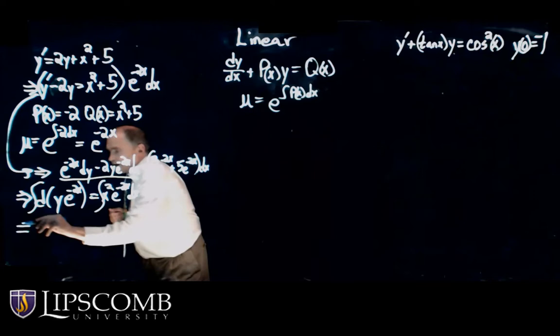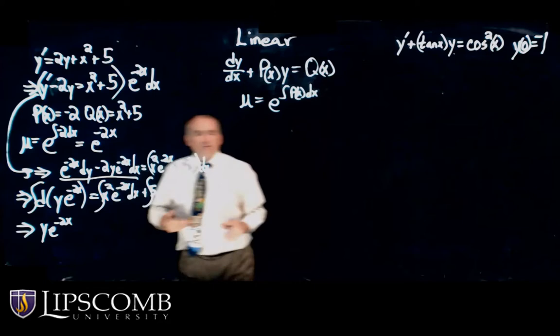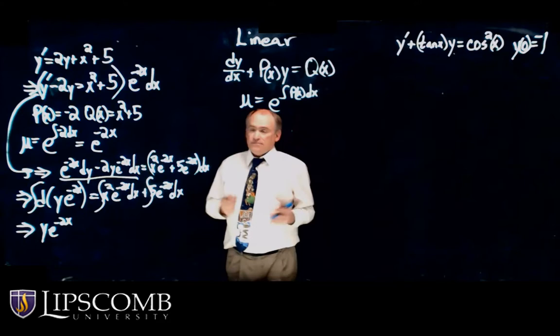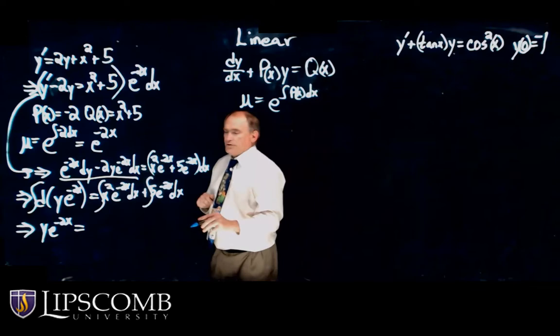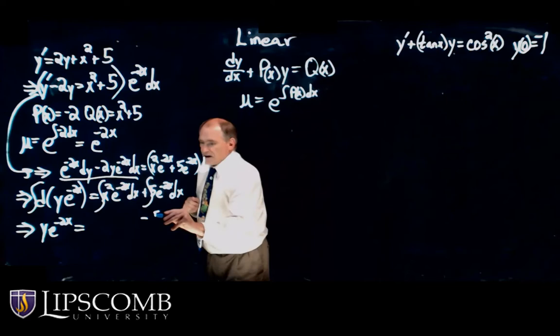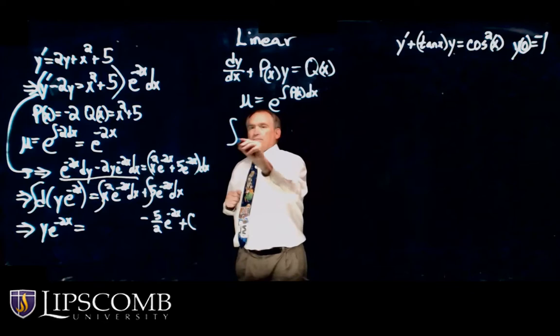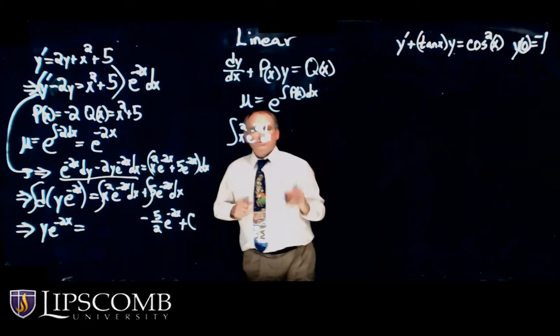On the left, the integral of d(y·e^(−2x)) gives y times e to the minus 2x. For the right side, I'll do the easier term first: the integral of 5e^(−2x) dx gives minus 5 halves e to the minus 2x, and I'll add the plus C. For the other term, the integral of x squared e to the minus 2x dx requires integration by parts.